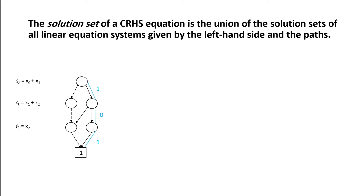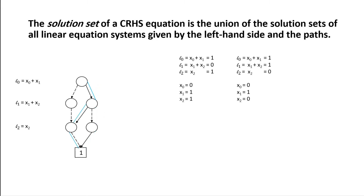For instance, if we choose the path 1-0-1 and associate it with the left-hand side, we get the linear equation system shown on screen. We can solve the system and get a solution. We can do the same for the two remaining paths in the right-hand side of the compressed right-hand side equation, getting a total of three solutions — one for each of the linear equation systems.